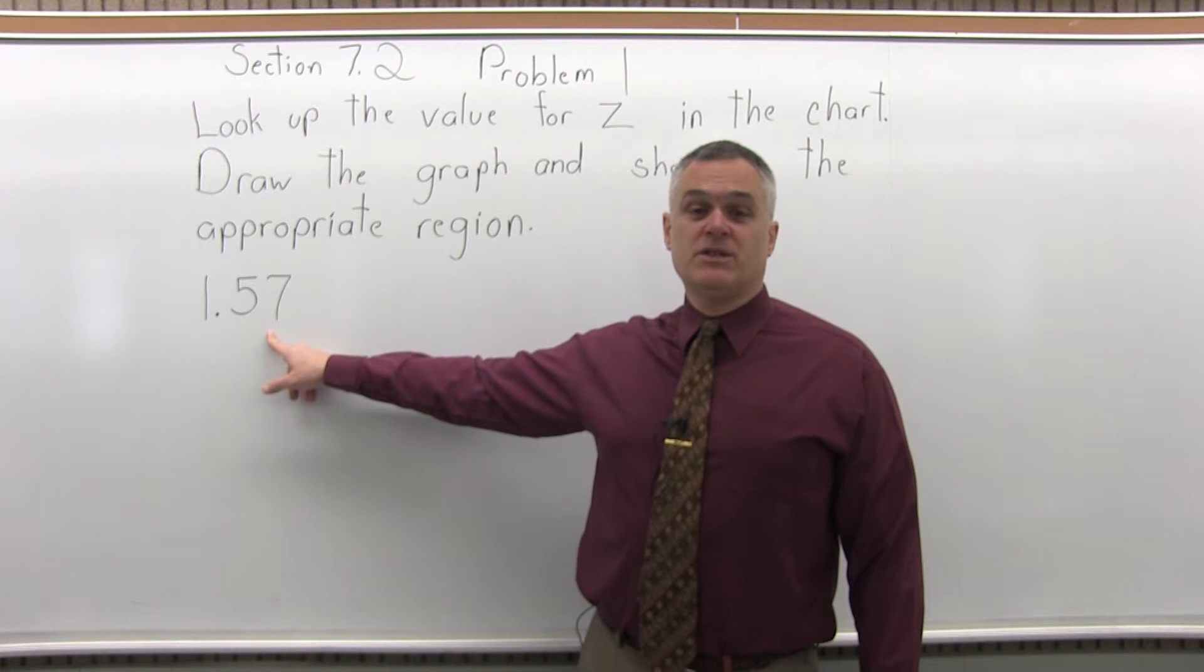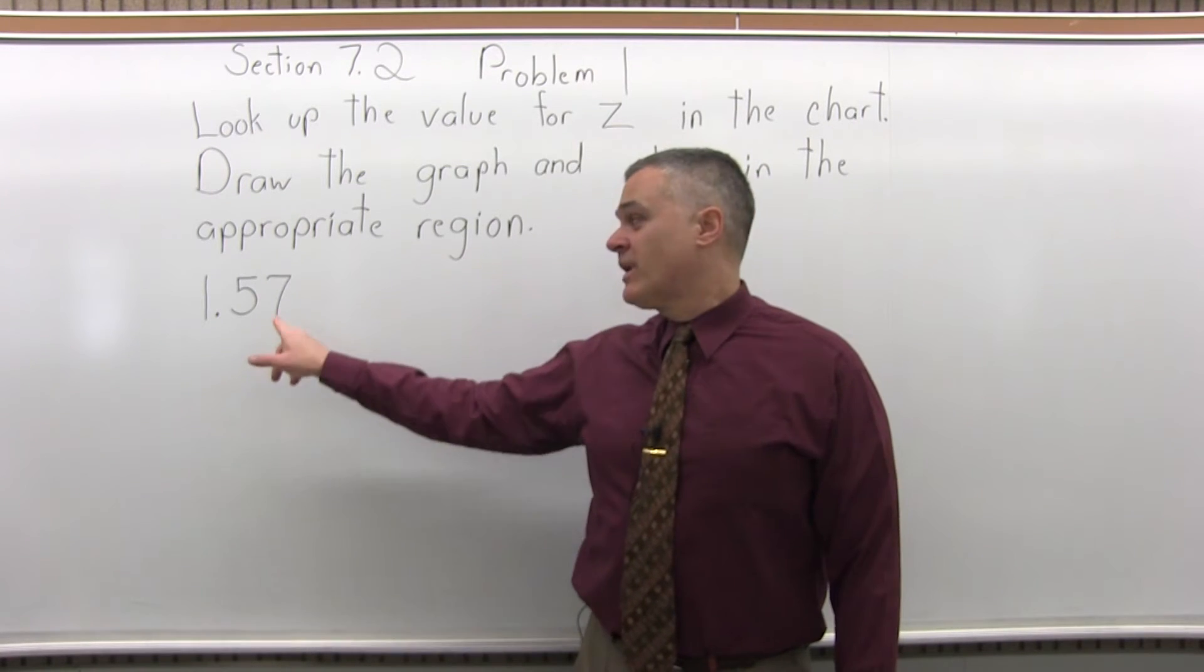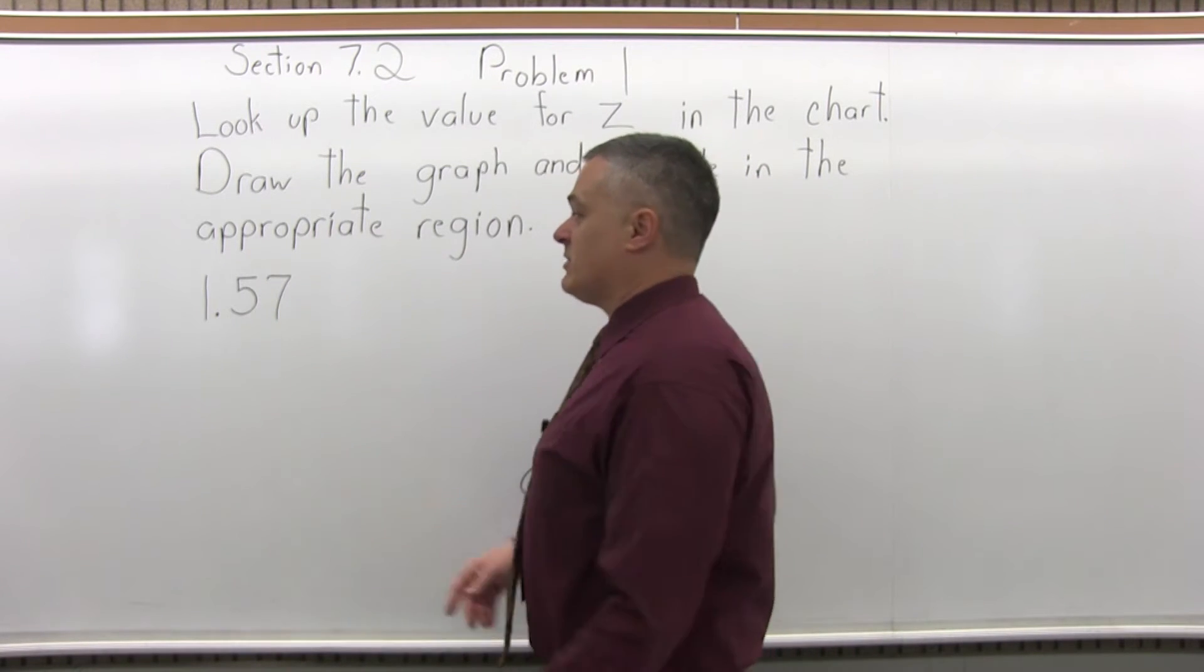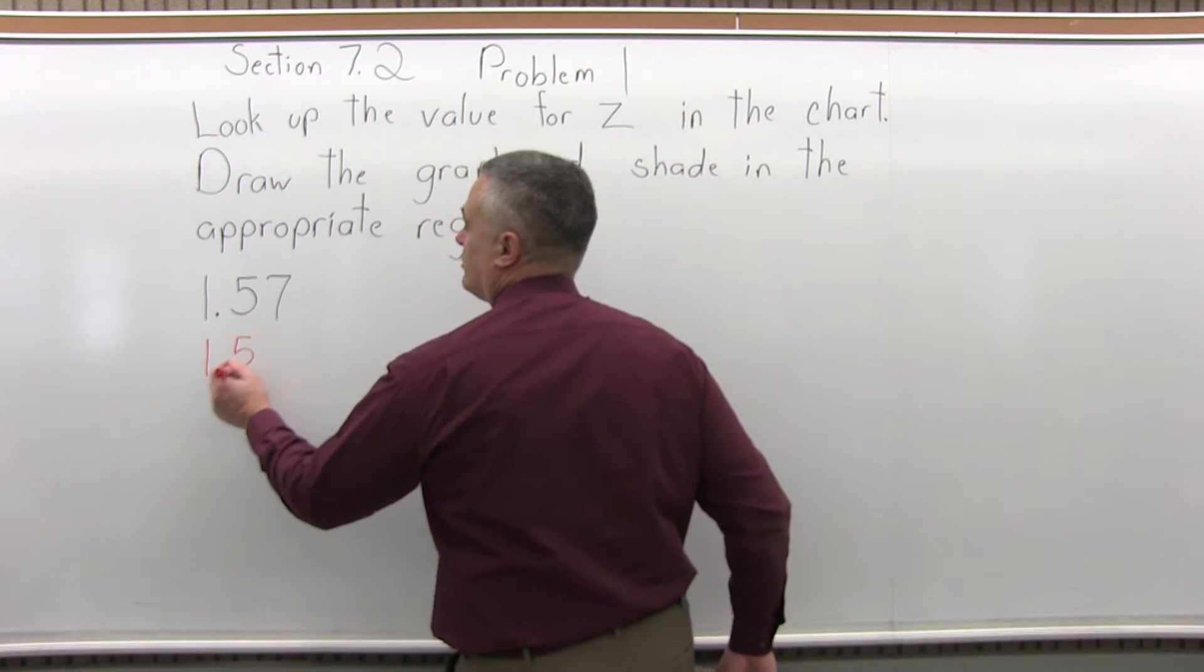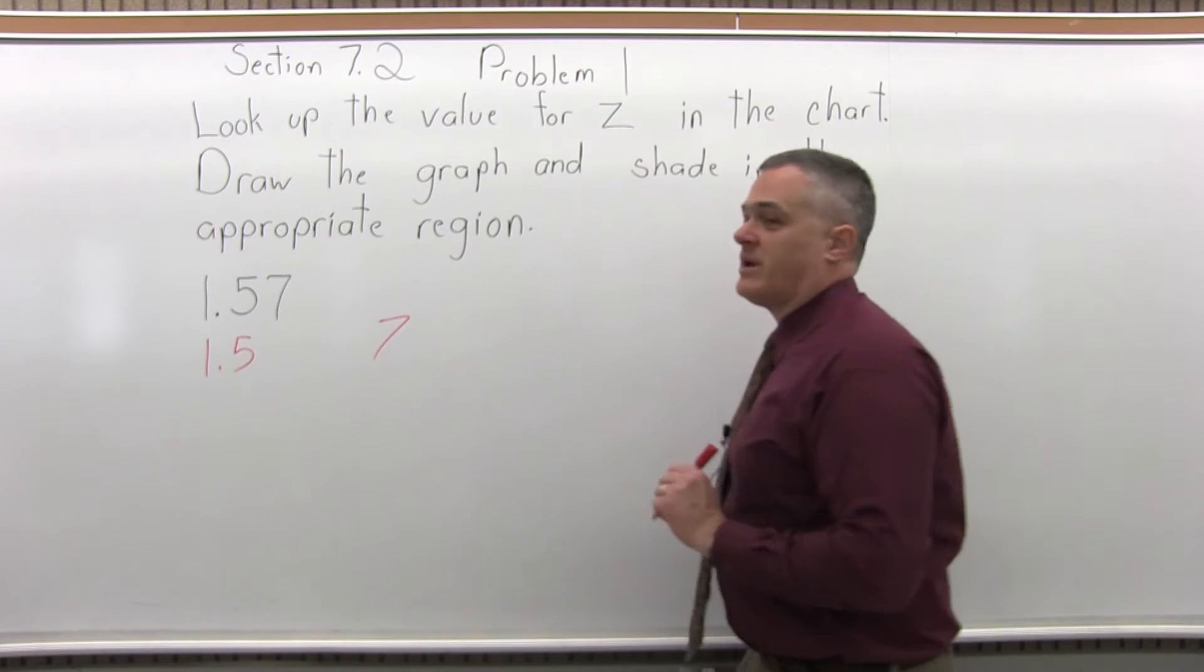Step 2: split the number into two parts by pulling off the rightmost digit. The 7 is the rightmost digit, we're going to pull it off. So we have split the number into two parts by pulling off the rightmost digit.